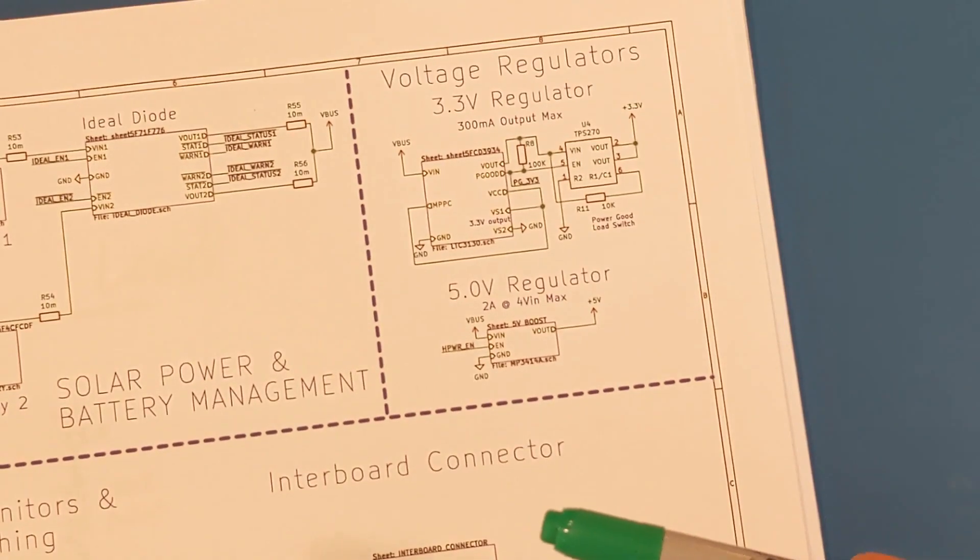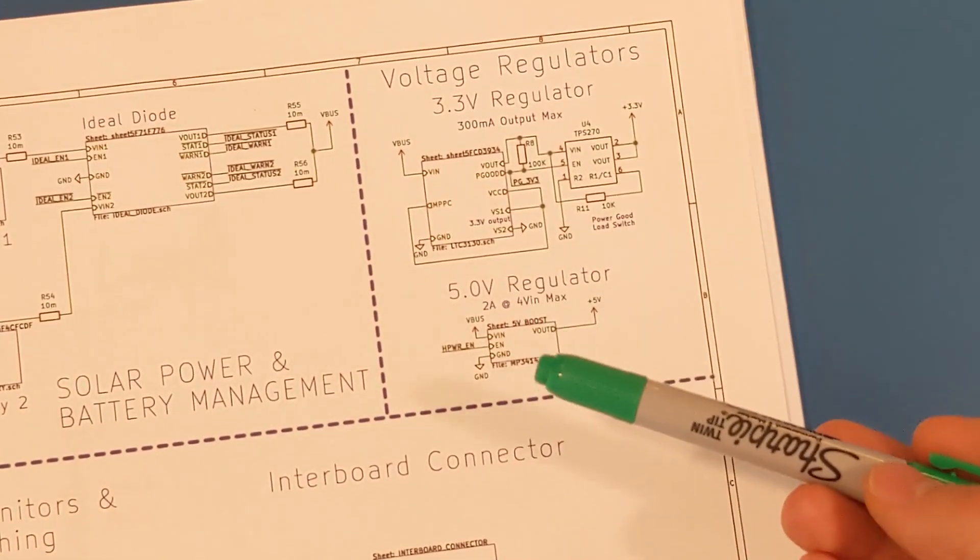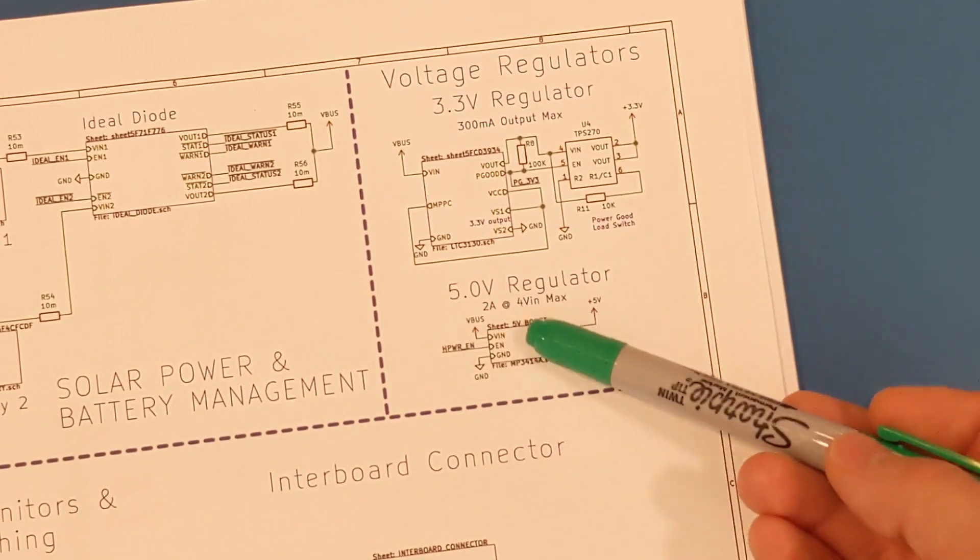This 5 volt regulator is what I plan on hooking up to a high power device like a radio. That's why I have this 5 volt regulator specced up to 2 amps output.